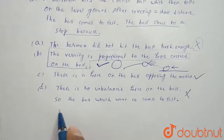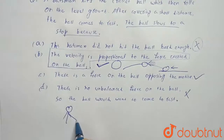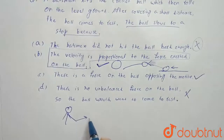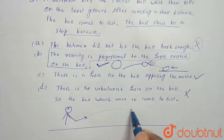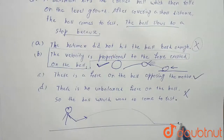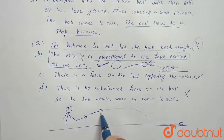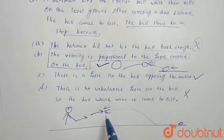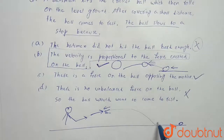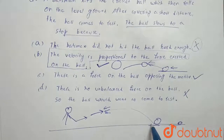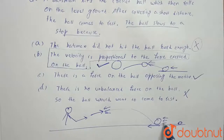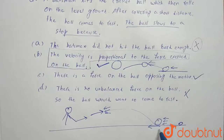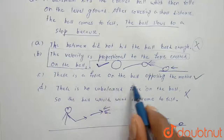When the batsman hits the ball, the ball flies in the air first, then comes to the ground and rolls, then comes to rest. When the ball is in the air, there is air resistance acting on it. When the ball comes to the ground, there is friction in the opposite direction, and air resistance also acts opposite to the motion of the ball. So there is a force on the ball opposing the motion.